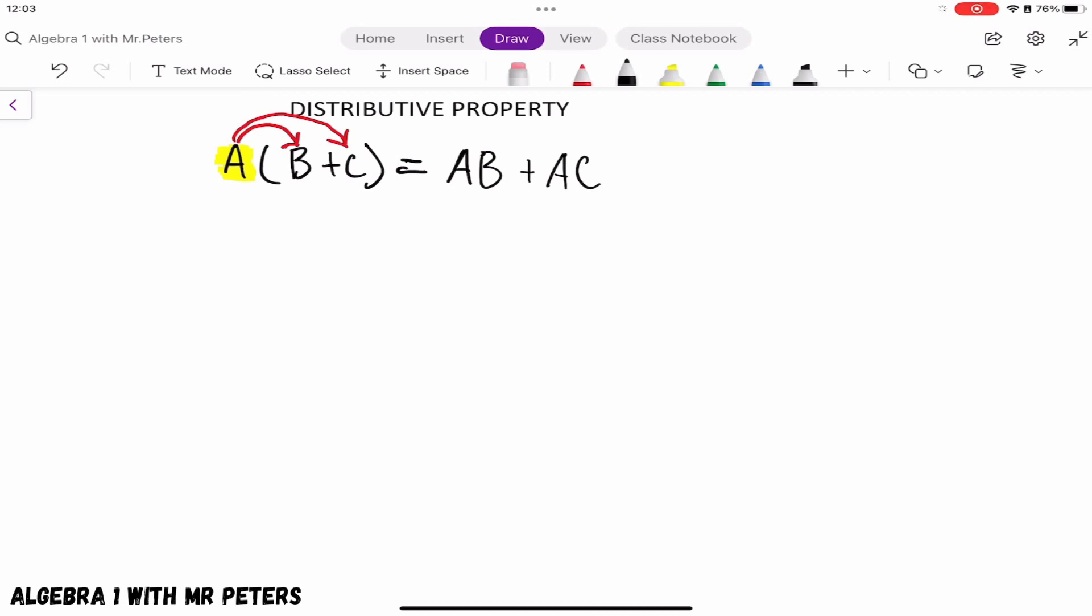Let's start with our first example: 7(x+4). What they're asking us to do when they say to distribute is they want us to do 7 times x and 7 times 4. When we have 7 times x plus 7 times 4, that's going to give us a final answer of 7x + 28.